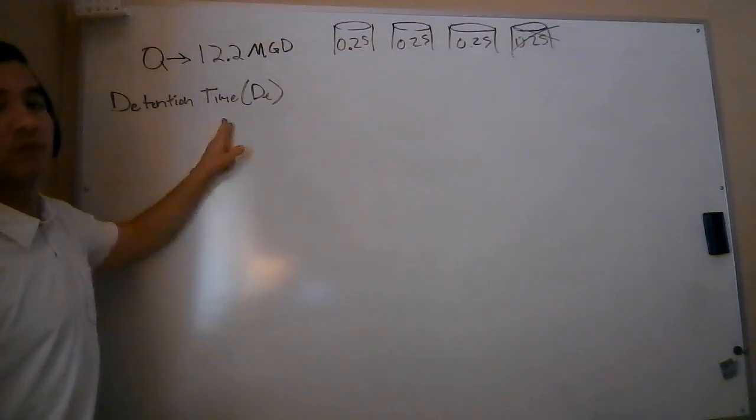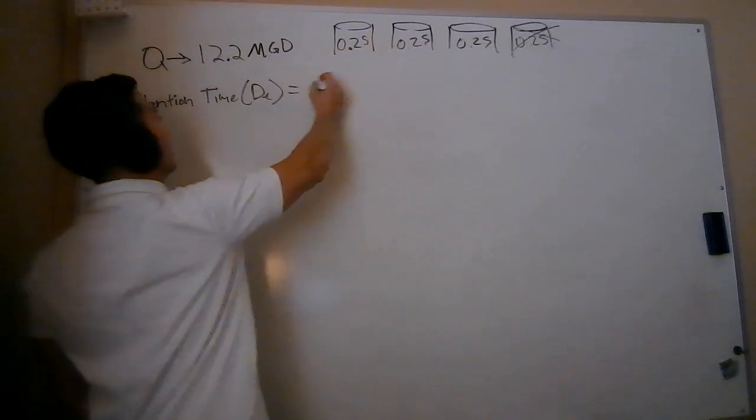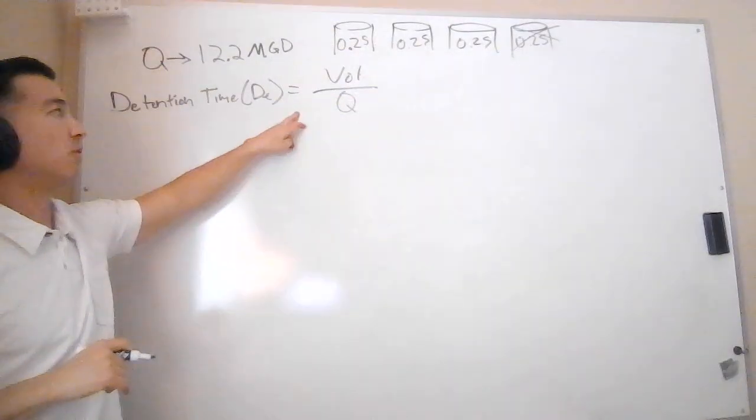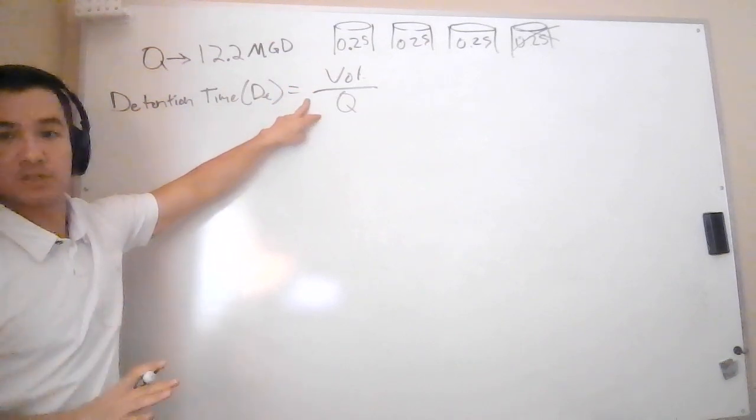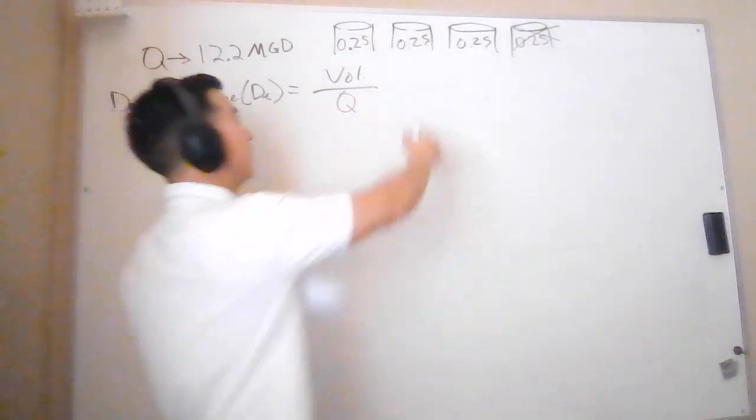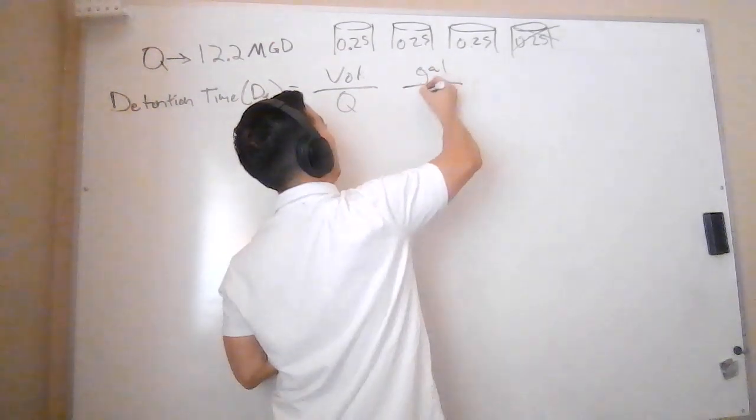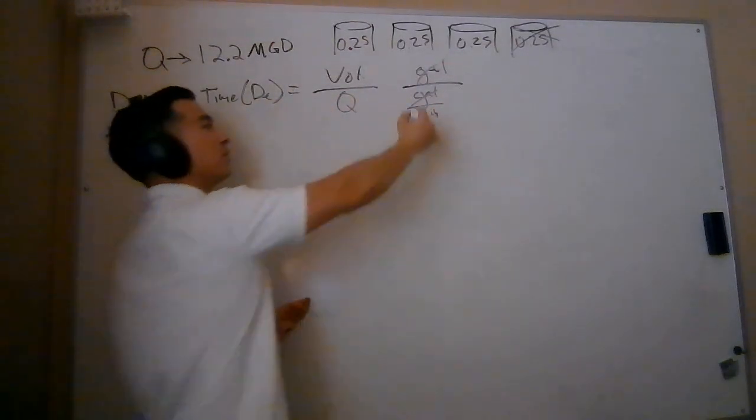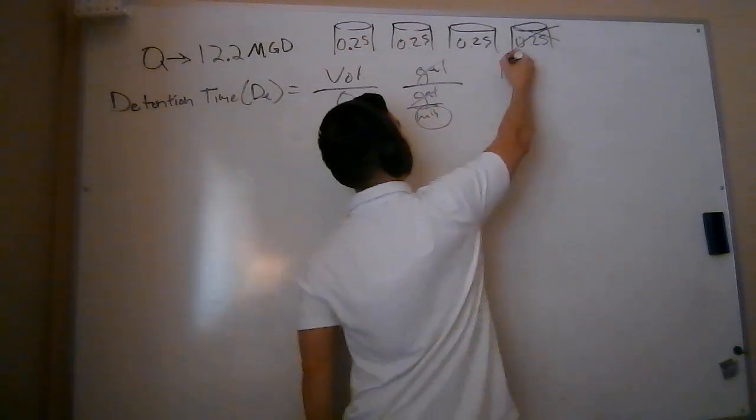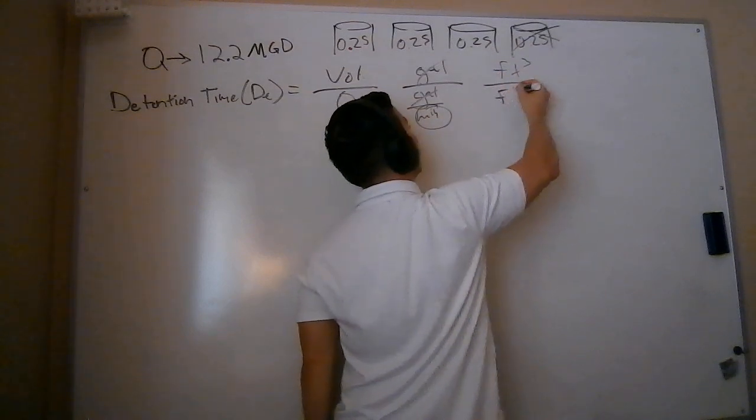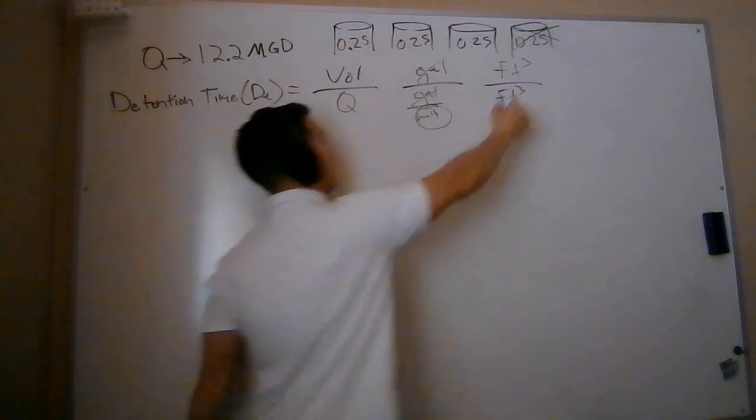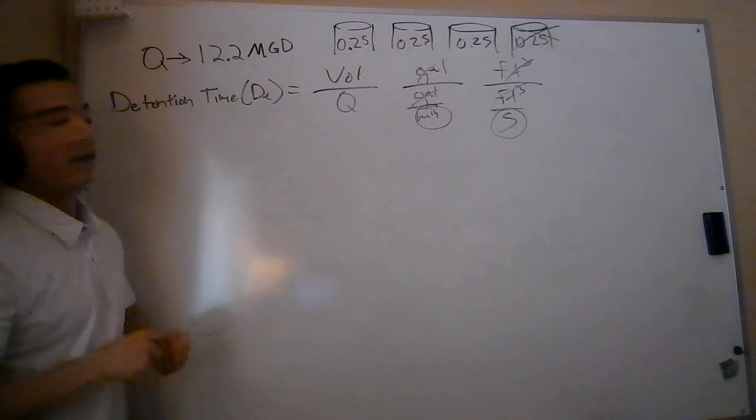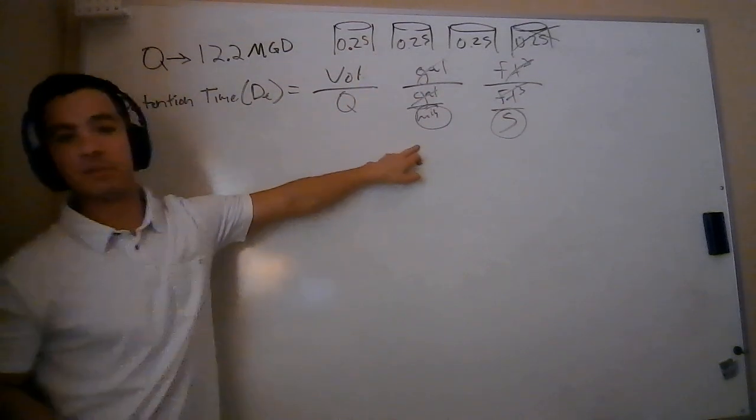So in order to do that, what do we need? We need the formula for detention time which as we know is going to be volume divided by flow. Now it's really important in this detention time formula that your volume and flow units match. That's the only way we're left with time. So if I'm given volume in gallons, then I'm going to want my flow in gallons per minute. This allows gallons to cancel out. So what am I left with? I'm left with just minutes. It would be the same thing if I was given volume in cubic feet. I want my flow to be in cubic feet per second so that my cubic feet are going to cancel out and I'm going to be left with seconds. It's really important. Your units must line up so they cancel out to be left with time.